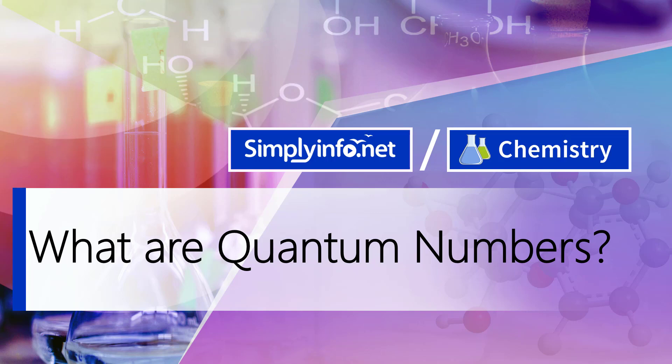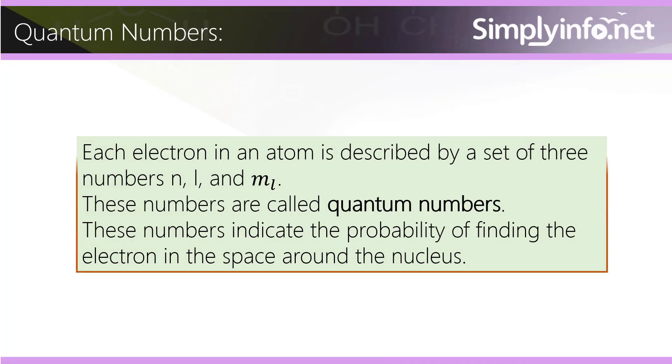What are quantum numbers? Each electron in an atom is described by a set of three numbers: n, l, and m sub l. These numbers are called quantum numbers. These numbers indicate the probability of finding the electron in the space around the nucleus.